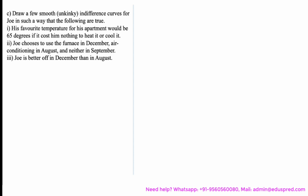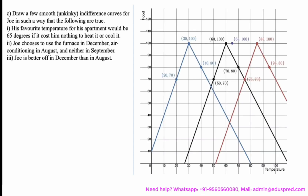Joe is better off in December than in August. This was the graph we drew in the previous part, where on the x-axis you have temperature and the y-axis you have food. The black budget line corresponds to September where the temperature outside is 60 degrees, the blue one corresponds to December, and the red one corresponds to August where the temperature outside is 85 degrees. Since his favourite temperature is 65 degrees, if the temperature outside is 65 degrees he would spend nothing to cool or heat it, leaving him with an entire budget of $100 to spend on food — giving you the point 65, 100.